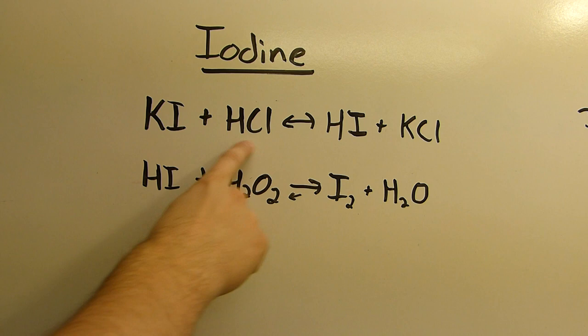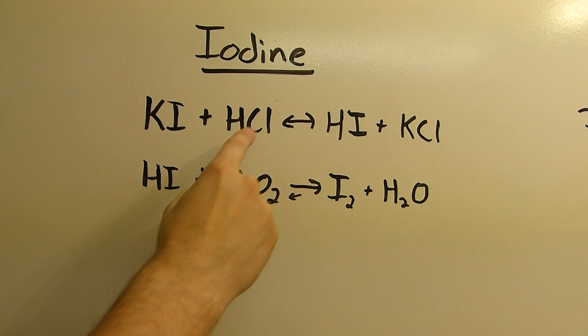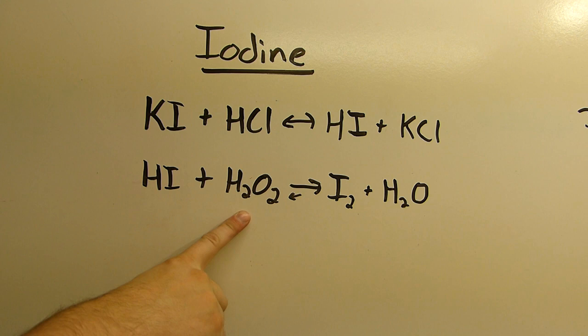Now to get the hydroiodic acid in the first place, I'll be reacting potassium iodide with a strong mineral acid to make the hydroiodic acid and potassium chloride. And we have to use a strong mineral acid here of course because hydroiodic acid is actually stronger than HCl, and although this is an equilibrium as set up here, the equilibrium actually favors this side.